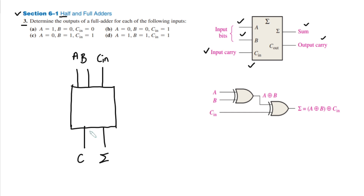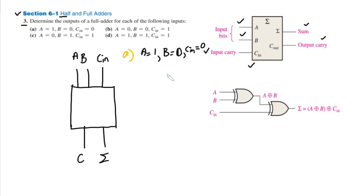So let me start part a. In part a we have A equal to 1, B equal to 0, and input carry equal to 0. We have to determine the output. We add them together — A plus B plus C-in — as a binary addition. Putting in the values, I get 1 plus 0 plus 0, which gives me 1.